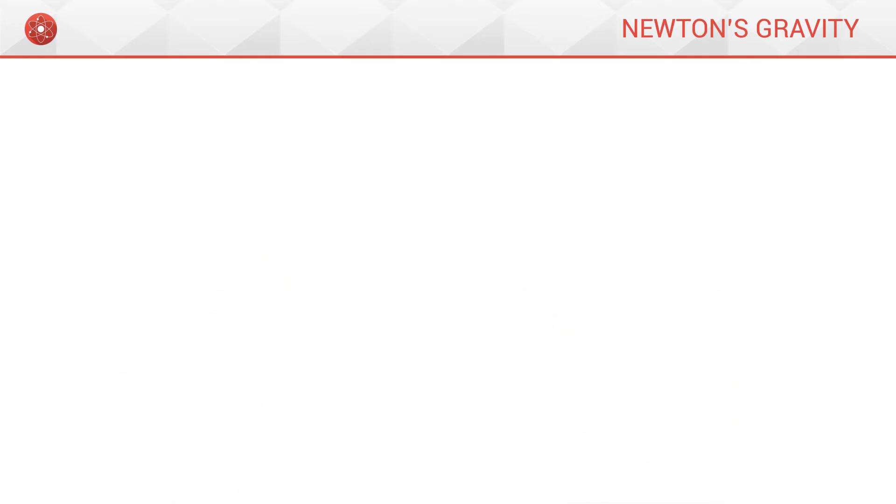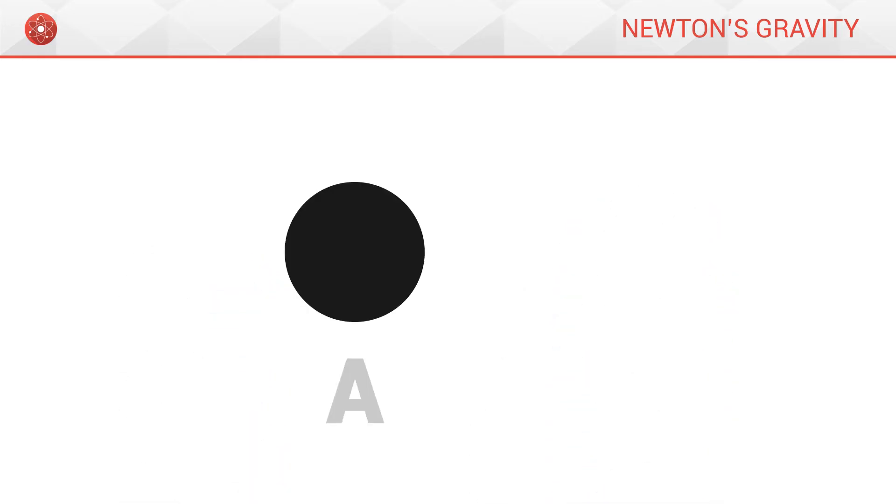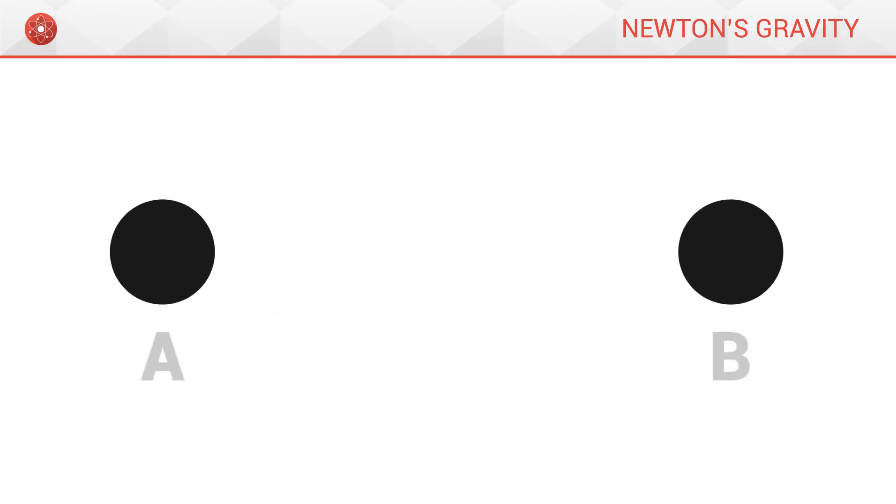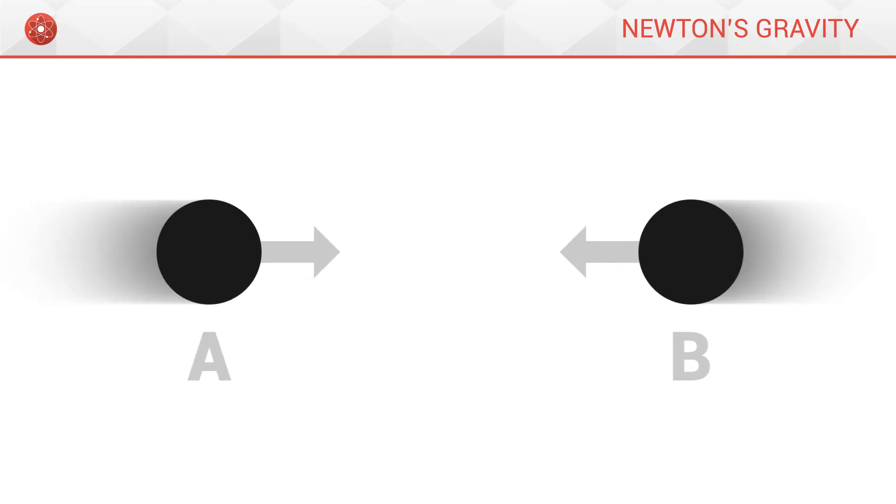Now let us imagine a first object A and a second object B separated by a certain distance. Because of gravitation, these two objects attract each other. In this way, A will get closer to B, and B will get closer to A.